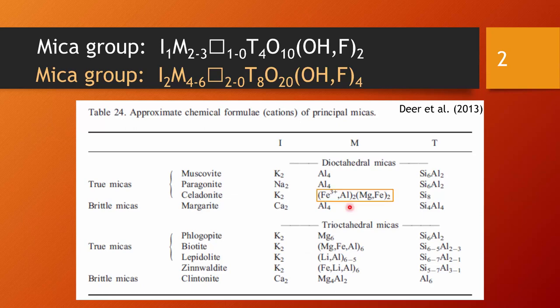We see here the celadonite is the only variety that accommodates ferric iron on the M position. That is an important feature that makes the data processing difficult when you obtain your own mineral analysis from mica group minerals. You will not know exactly how much ferric and ferrous iron might be in your crystal structure. But there are ways around that. You can calculate that, and in a different video I will show you how to do that.